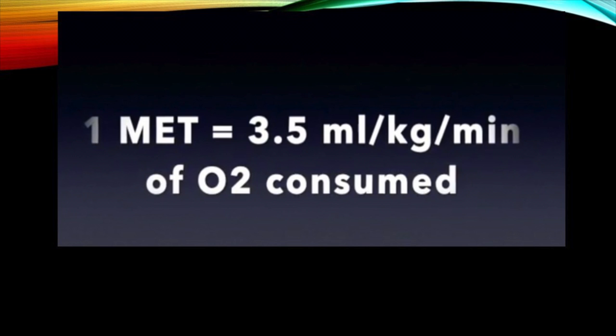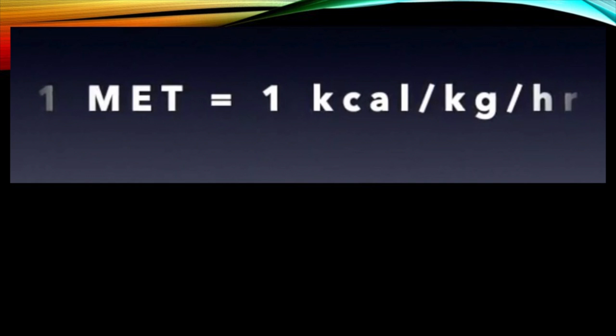Question number three: what is the MET — metabolic equivalent of task? A MET is oxygen consumed per kilogram of body weight per minute, and represents the amount of oxygen used by the body while at rest sitting quietly. The intensity of any activity can be identified by its metabolic equivalent of tasks. One MET is the rate at which you burn energy while sitting; if you're sleeping, you typically need 0.9 METs.